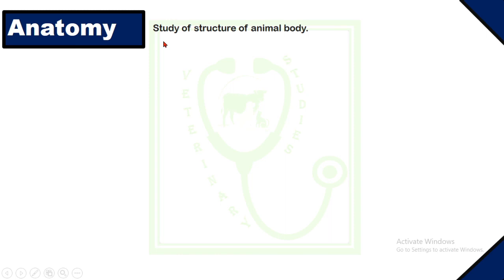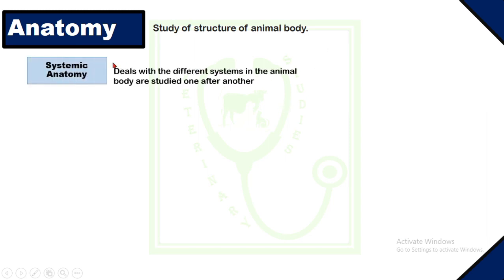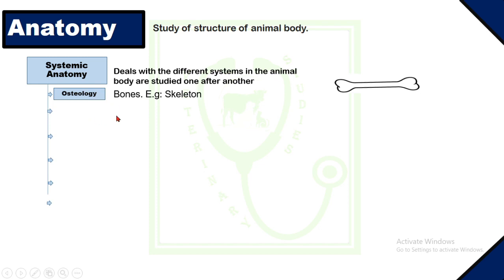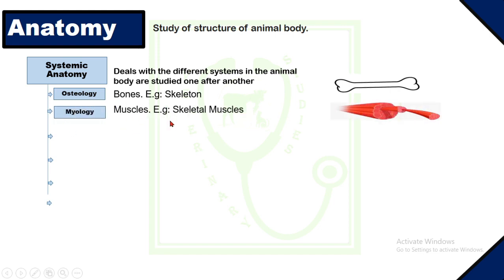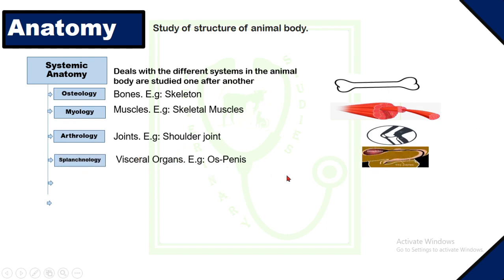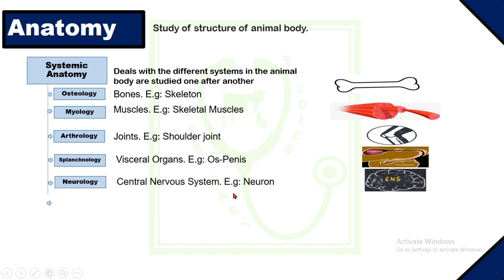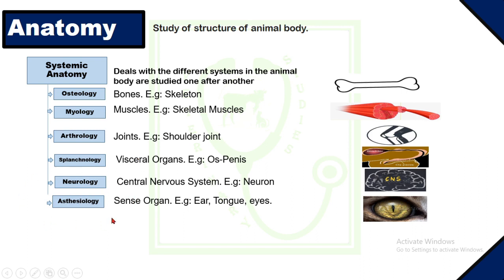Veterinary anatomy deals with the study of the structures of the animal body — structures which we can see with our naked eye. Veterinary anatomy includes systemic anatomy, which deals with the anatomy of the different systems of the animal body separately, one after another. Systemic anatomy divides into osteology — the study of bones — myology about muscles, arthrology about joints, splanchnology about visceral organs, neurology about the central nervous system, and esthesiology about the sense organs.